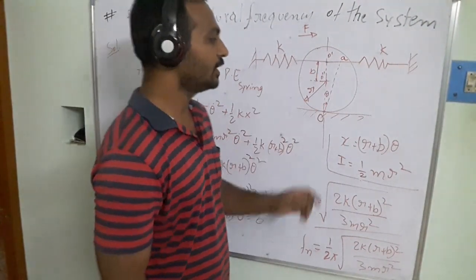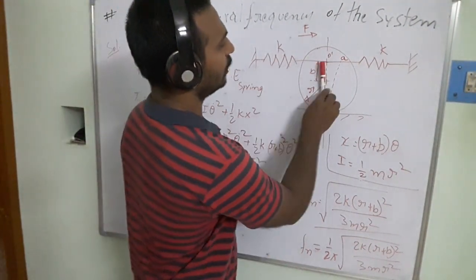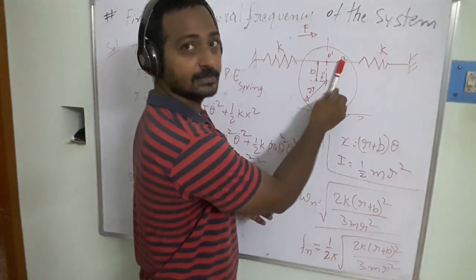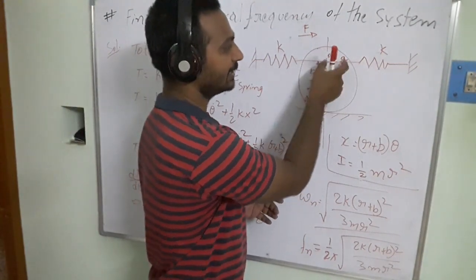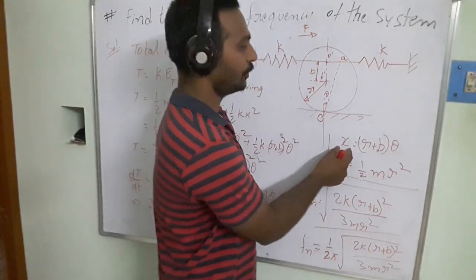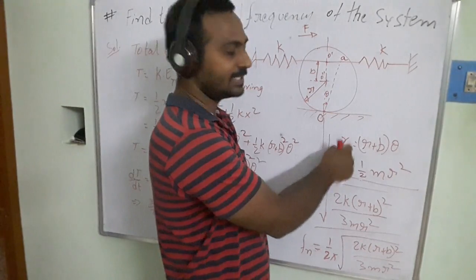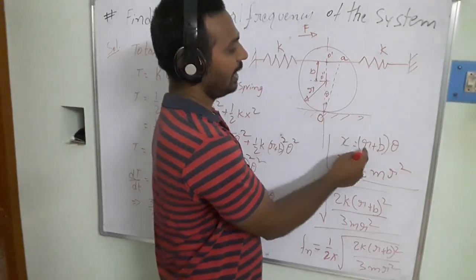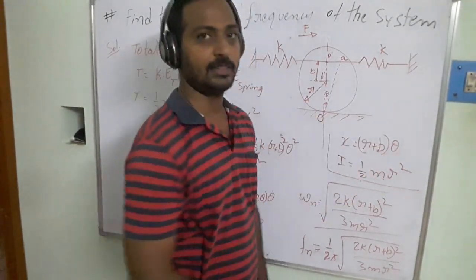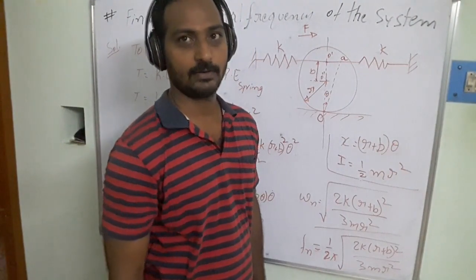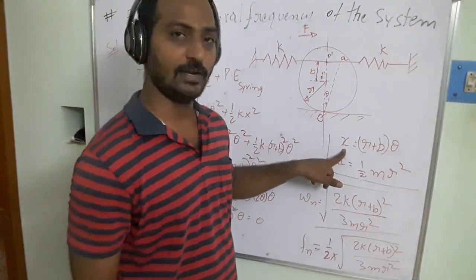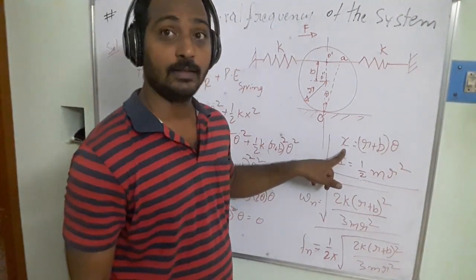Displacement takes place in the horizontal direction. The distance x is equal to (r + b) multiplied by the angular displacement θ. Once we differentiate this, we get the velocity of the object.